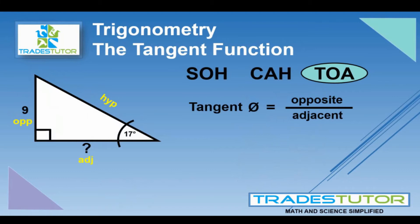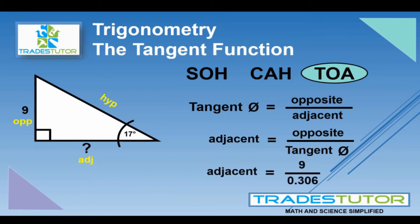So, the opposite we know. And the tangent, I'm not going to use the calculator on this one. You type in 17, 17 degrees, and then hit tangent, and you'll get 0.306. Once again, that's the relationship between the opposite and the adjacent. So, your adjacent works out to be 29.41.